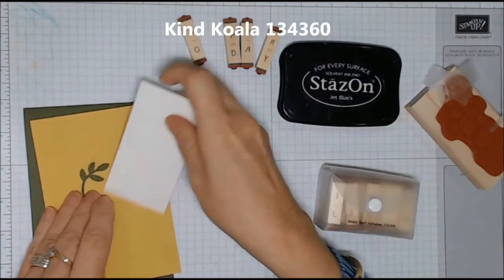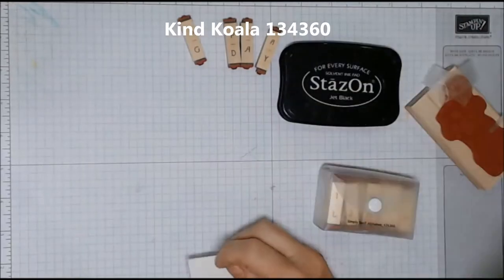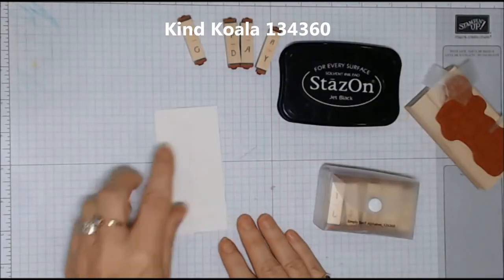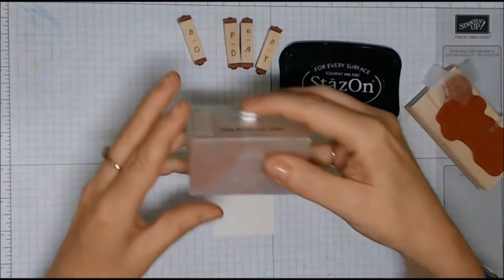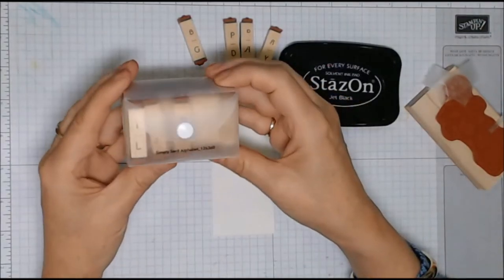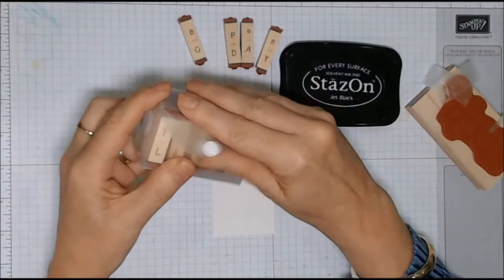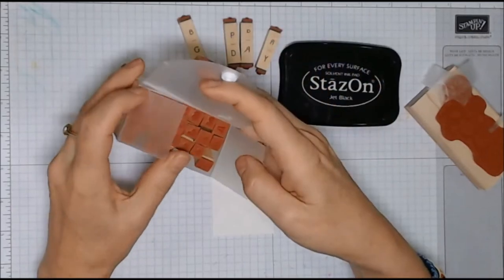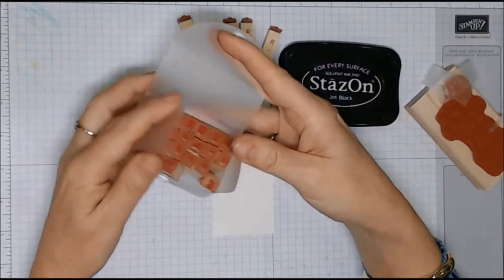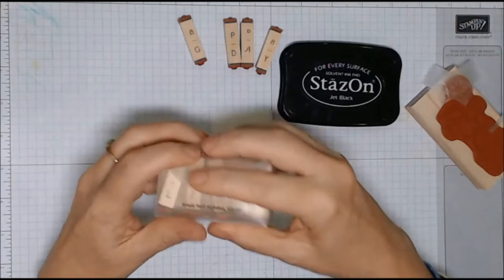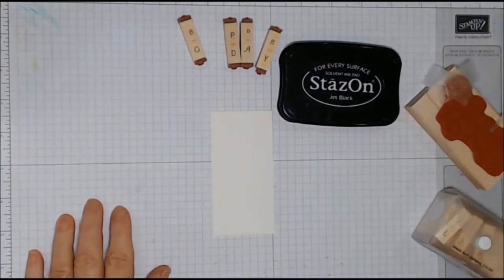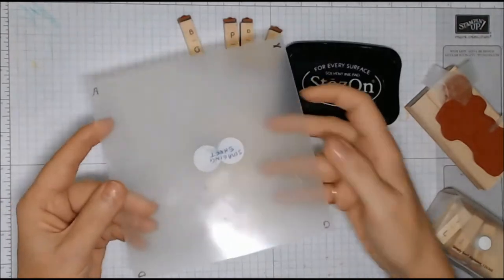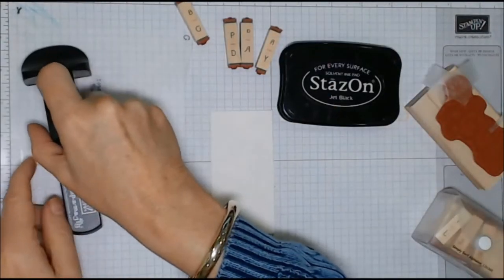I'm also using the Simply Seraph stamp set and the Kind Koala stamp set. I've taken the Simply Seraph stamp set - you can see how well it comes packaged. I've used the uppercase letters G, D, A, Y, and I have already stamped them onto the imaging sheet of my Stamparatus so that I can position them onto the card. You can see I've put one letter in each corner.